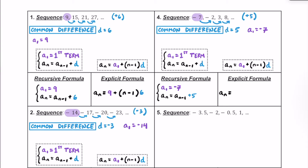Taking a look at the explicit formula, we have a sub n equal to a sub 1, which is negative 7 in this case, plus the quantity of n minus 1 multiplied by d. And in this case, d is going to be 5. Feel free to put parentheses around it if you want.